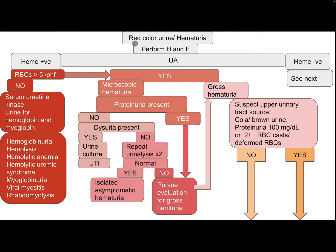For a child presenting with red-colored urine or hematuria: after history and physical examination, perform urine analysis. If it is heme positive with RBC fewer than 5 per high power field, the patient needs serum creatinine kinase and urine testing for hemoglobin and myoglobin. Differential diagnosis includes hemoglobinuria from hemolysis or hemolytic anemia, hemolytic uremic syndrome, and myoglobinuria from viral myositis or rhabdomyolysis.